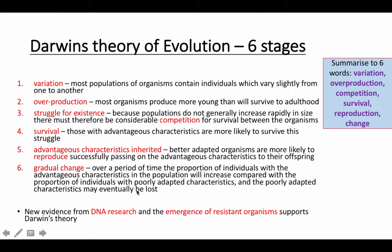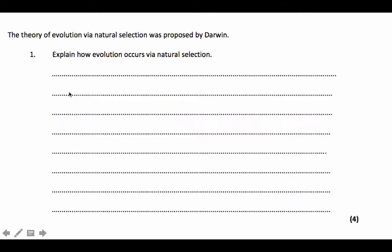Eventually over the course of many millions of years, organisms can completely change and actually become a brand new species. These are the steps in evolution — in natural selection — the survival of the fittest. Whenever you see any question to do with this, the answer is pretty much always the same thing. Let's have a look at a question: the theory of evolution via natural selection was proposed by Darwin. Explain how evolution occurs via natural selection.